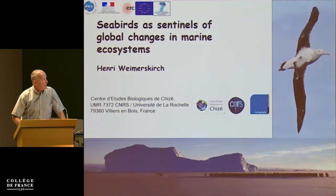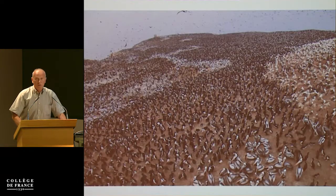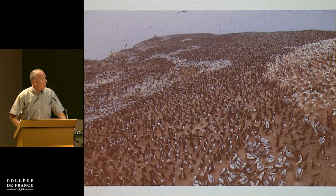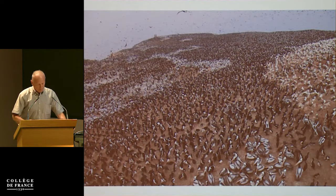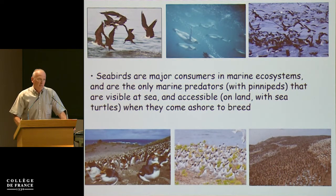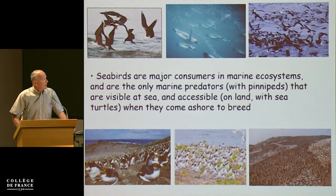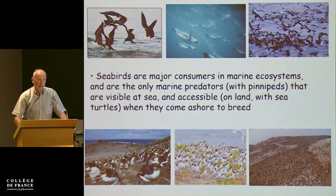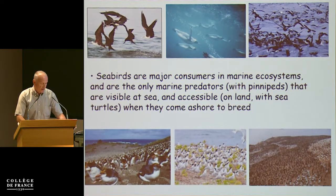Seabirds are well known for gathering in very large colonies, like here off the coast of Peru — a large colony of several species of guano birds. Seabirds rely entirely on what happens at sea. They spend 90 to 95% of their time at sea, foraging for food — small organisms, fish, squid, crustaceans. Because they are accessible on land but rely on the sea, they have been considered quite good indicators of what happens in the marine environment.